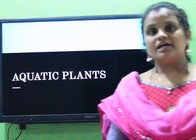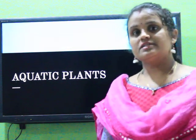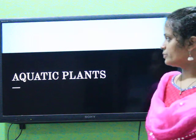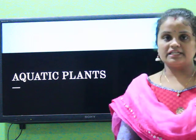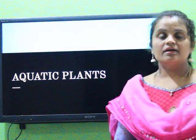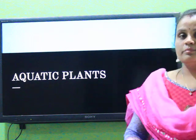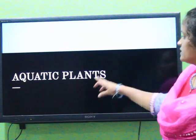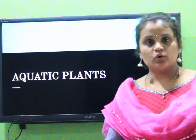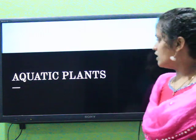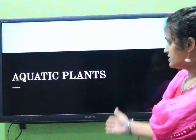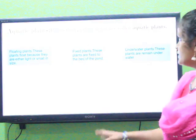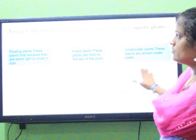Hello children. In the last video we discussed about terrestrial plants and the next topic is aquatic plants. Aqua means water. Aquatic plants means plants which are growing in water are called aquatic plants. Aquatic plants are classified into three parts.